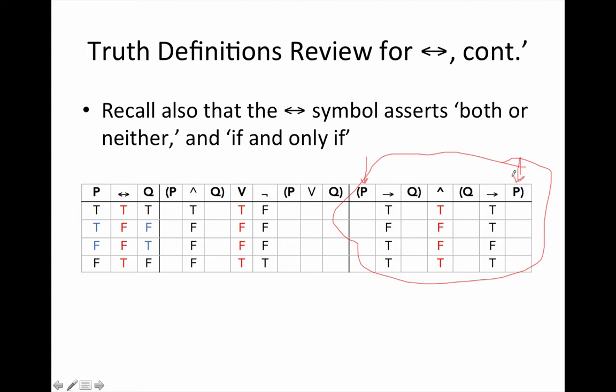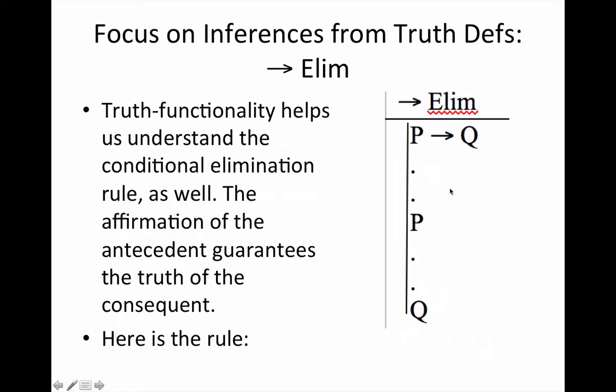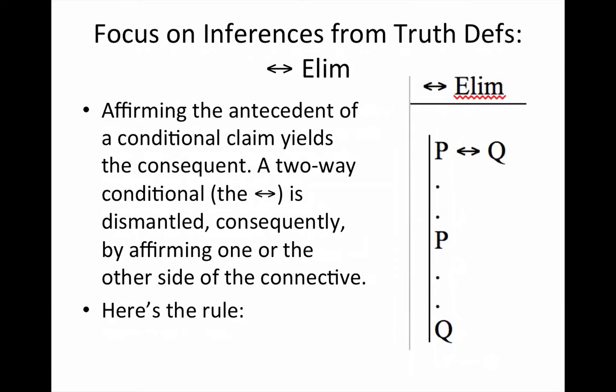We have P as a sufficient and a necessary condition for Q and vice versa. So we know that we can dismantle the conjunction such that we end up with P arrow Q on one line. We can also end up with Q arrow P on one line. As long as we have P by way of conditional elimination, we have Q. And then once we have Q,